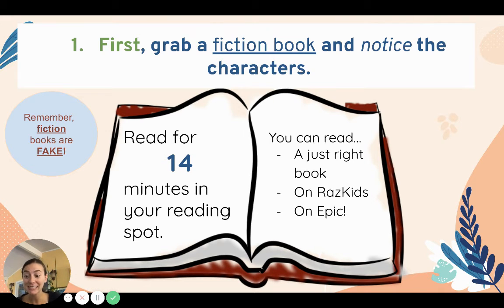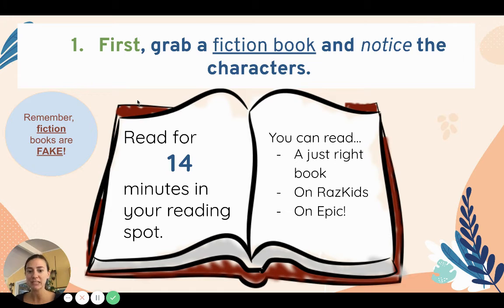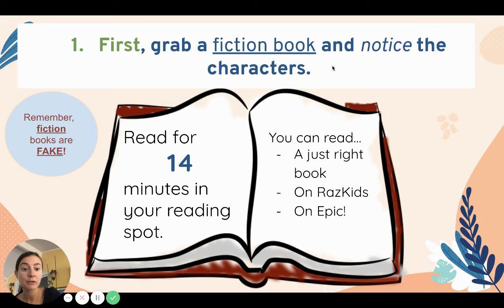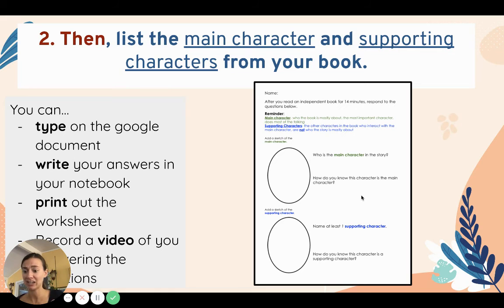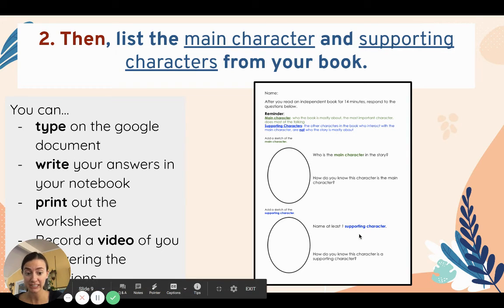So today, for your assignment, you're going to go grab a fiction book — and remember, fiction is fake. Read for 14 minutes, and notice the characters as you're reading. You can read a just-right book, read on Raz-Kids, or read on Epic. Then you are going to list the main character of the book you read and one supporting character, and tell us how you know that's the main character and how you know that's the supporting character.